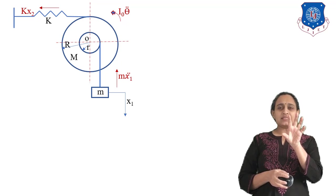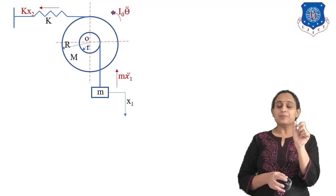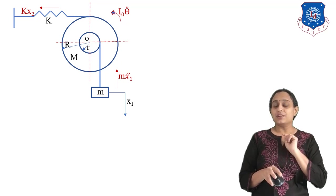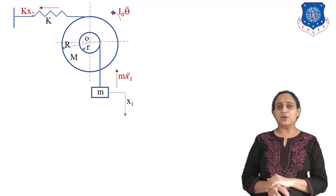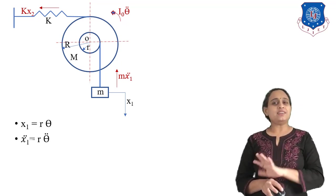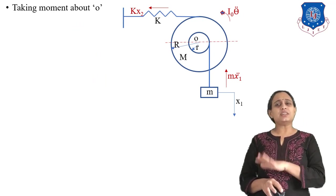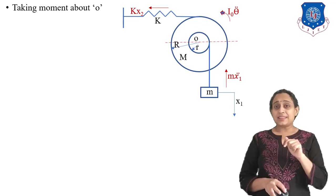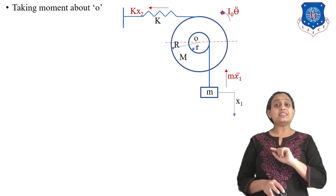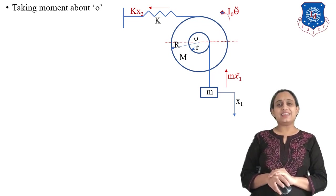X₁ = r·θ, so Ẍ₁ = r·θ̈. X₂ = R·θ. The mass m displaced by X₁ creates an inertia force upward; the pulley rotating clockwise has inertia torque I₀·θ̈ anti-clockwise; and the spring force KX₂ acts opposite to elongation. Taking the sum of moments about O equal to zero: I₀·θ̈ + m·Ẍ₁·r + K·X₂·R = 0.